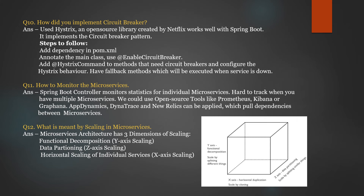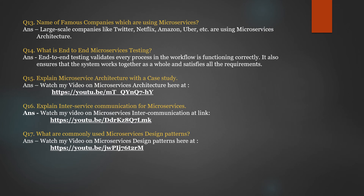What is meant by scaling in microservices? There is X-axis scaling, which is horizontal scaling of your services. On the Y-axis, you have functional decomposition where you scale by splitting different things. Data partitioning is on the Z-axis, where you split similar things — this will be covered in further videos. You may also be asked in interviews which famous companies use microservices or have moved from monolith to microservices. Examples include Twitter, Netflix, Amazon, and Uber, among many more you can explore online.